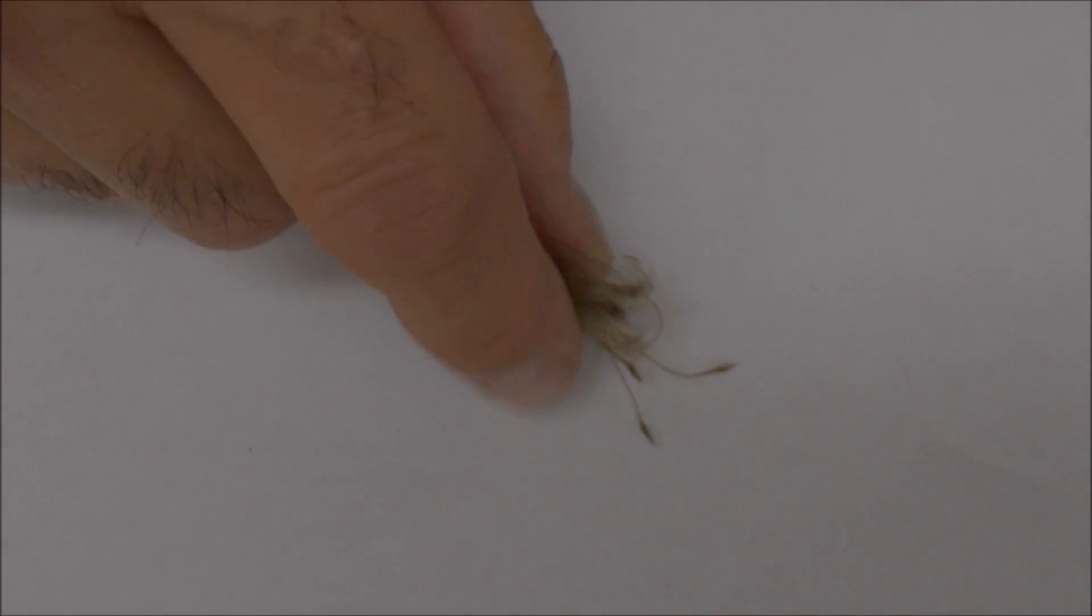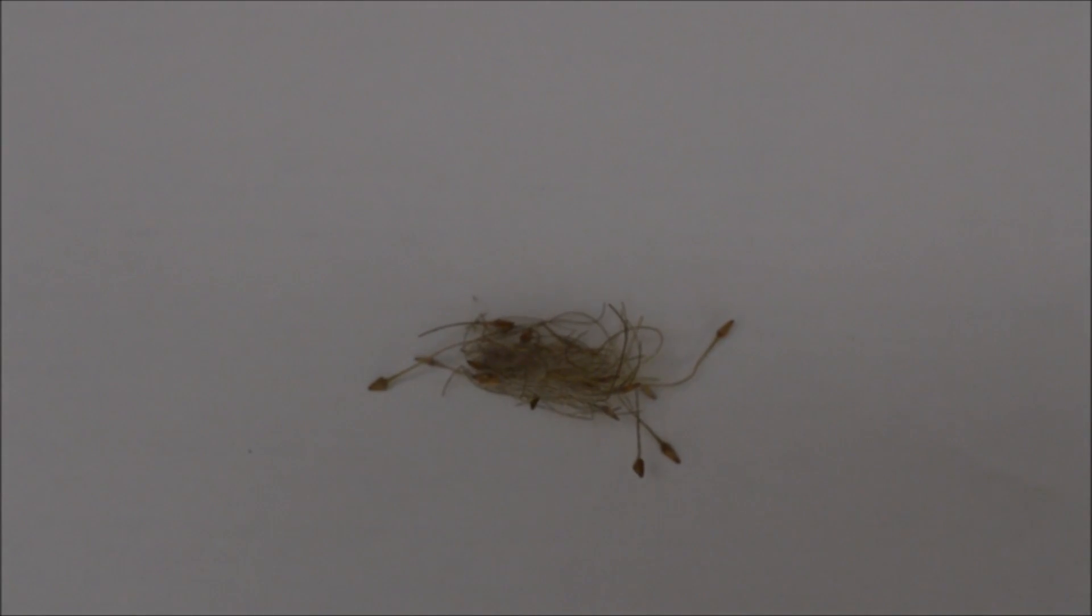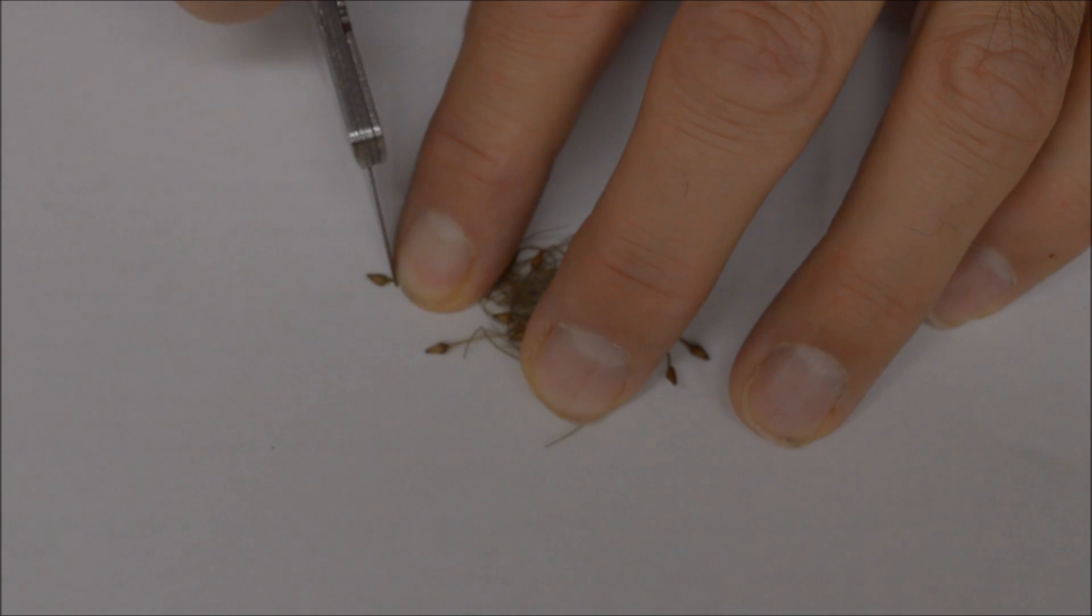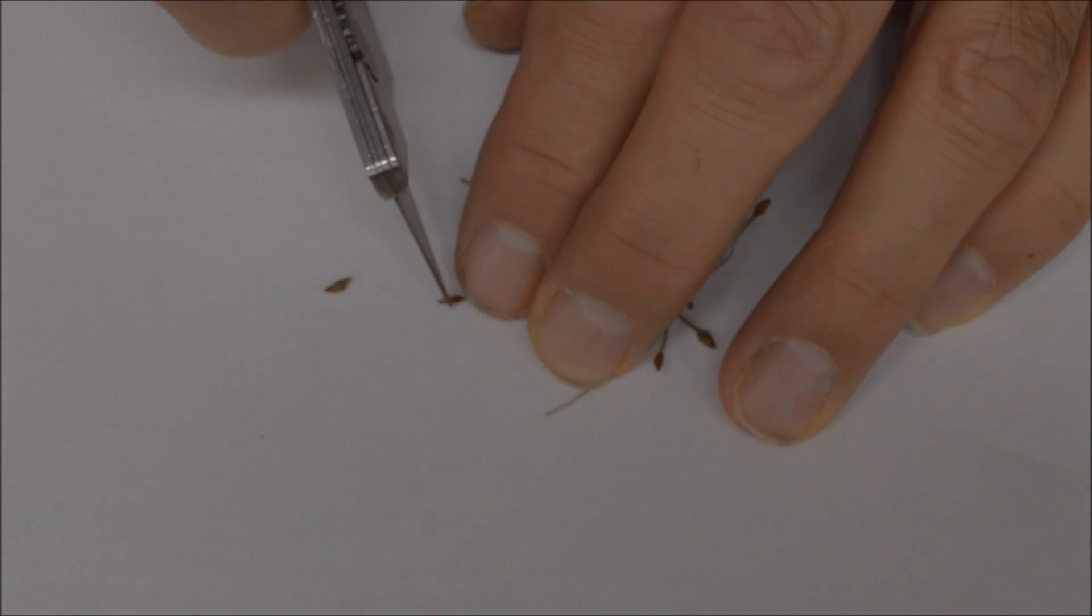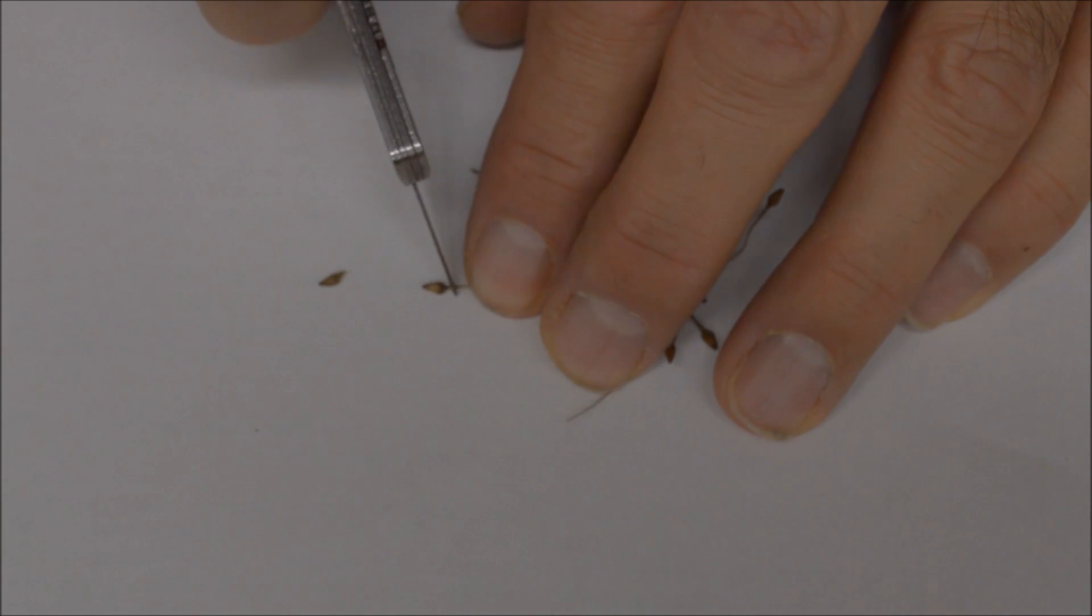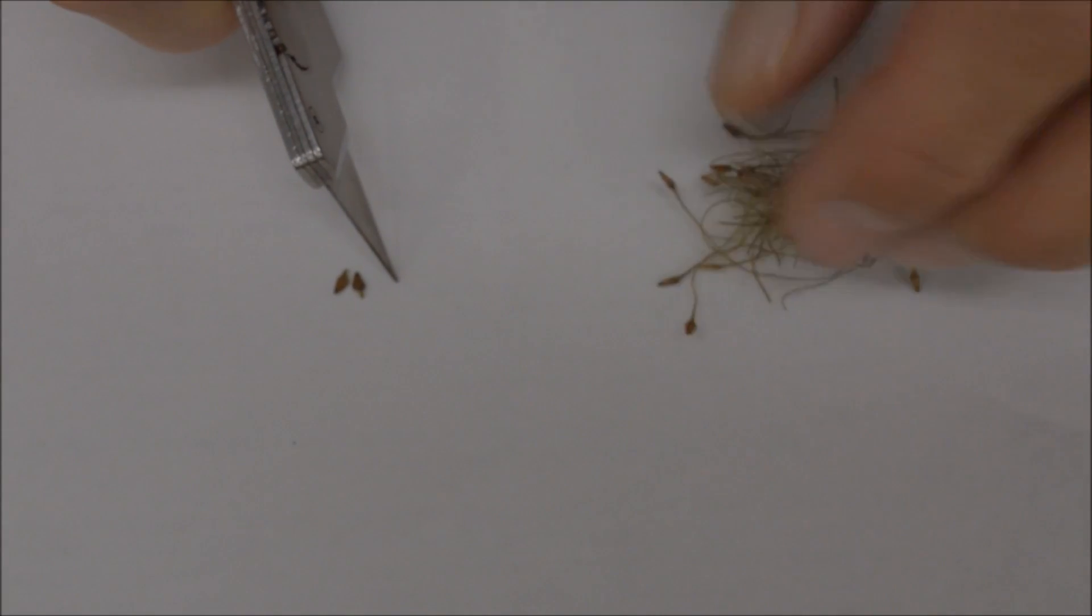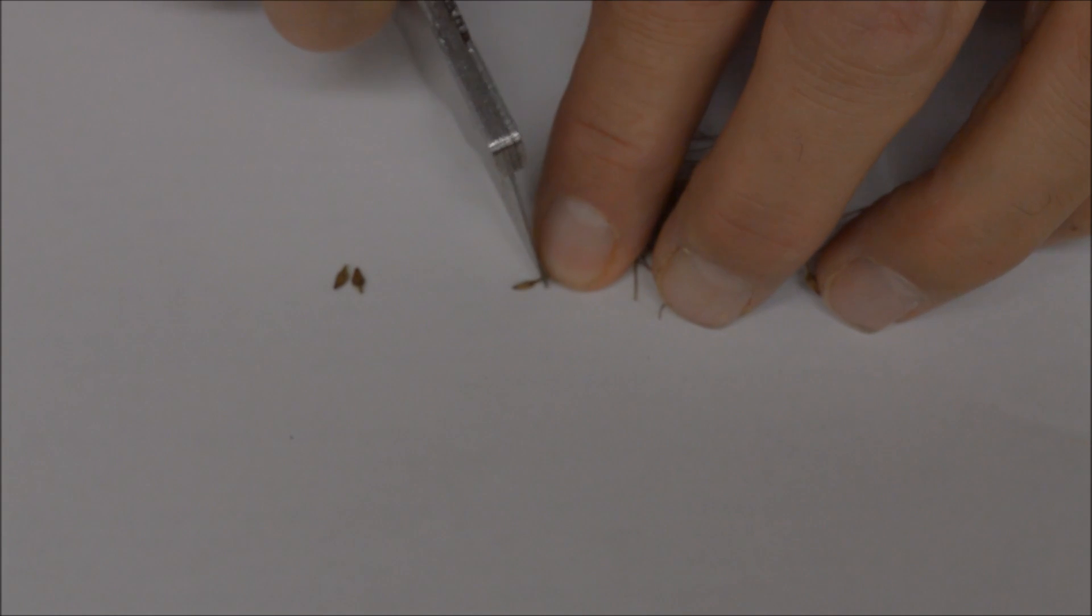Here are some clematis seed. They need a slightly different treatment. First, I used a knife to cut off their tails. Some people feel that the tails will prevent seed germination, but my studies indicate that this is probably a myth. Nevertheless, the seed is easier to handle without tails so I tend to cut them off.